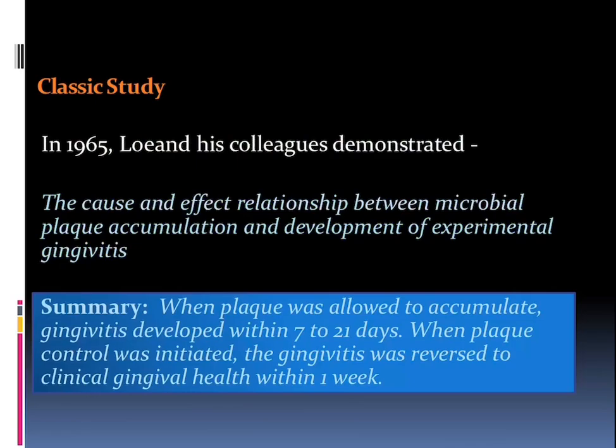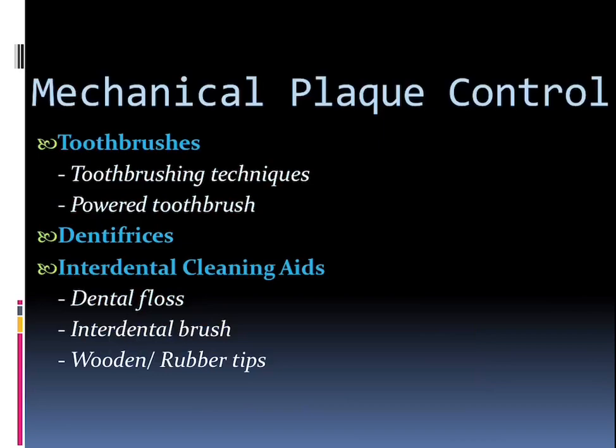Talking about a classical study by Löe and his colleagues, they stated a very important hypothesis: when plaque was allowed to accumulate, gingivitis develops within seven to twenty-one days, but when plaque control was initiated, this gingivitis was reversed back to clinical gingival health within one week only. So it is very important to know that if plaque control is maintained, we can convert gingivitis to normal health and hence periodontal disease progression can be stopped.